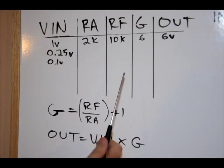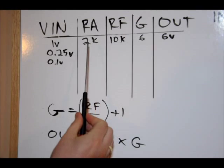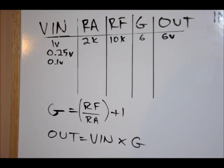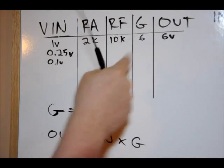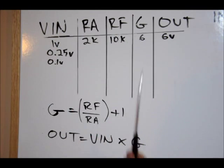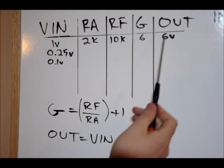Same as our other circuit, only in our circuit we just discussed RF is 5k, RA was 1k, so half and half. So 5 divided by 1 plus 1 is 6. So our output is determined by multiplying the input voltage by our gain, which is 6 volts.